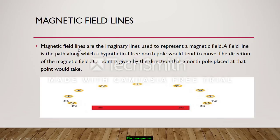What is magnetic field line? These are imaginary lines used to represent a magnetic field. A field line is the path along which a hypothetical free north pole would tend to move. The direction of magnetic field at a point is given by the direction that a north pole placed at the point would take.